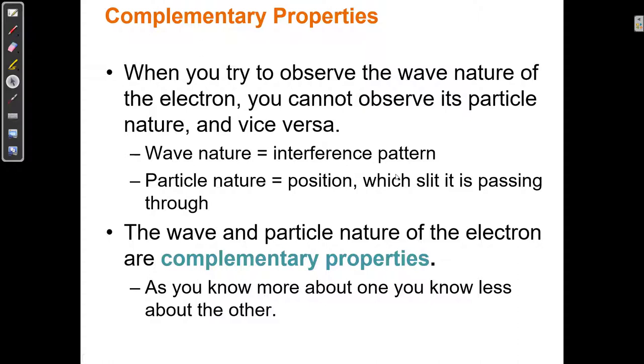So Heisenberg discovered a set of complementary properties, some of which are momentum and position. So we can't know both the momentum and the position in infinite accuracy of a particle. The more you know about one of those properties, the less you know about the other. We call these complementary properties. So the wave and particle nature of the electron are also complementary properties. As you know more about the wave nature of the electron, then you'll know less about its particle nature and so on.